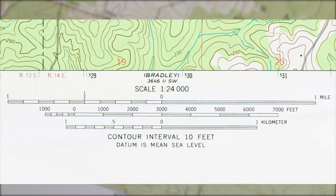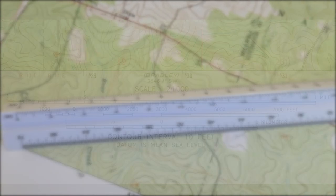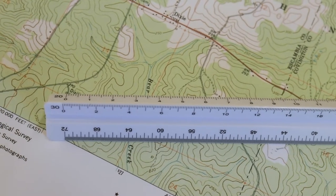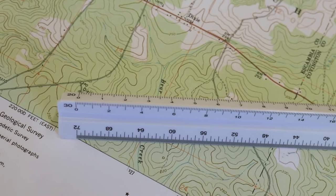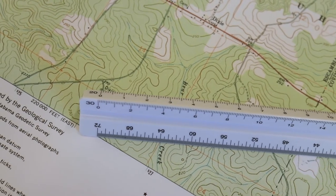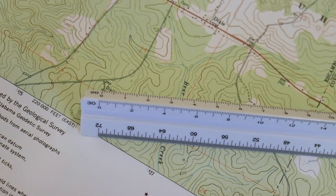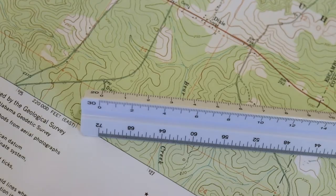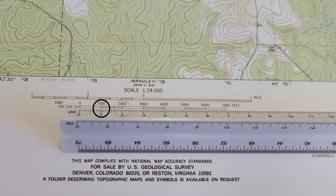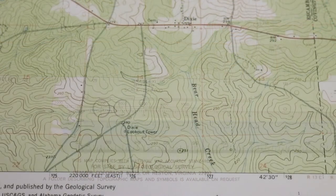Knowing that, we can then determine which side of the scale we should use to make our distance measurements. Because 1 inch equals 2,000 feet on this map, we can use the 20 side of the engineer's scale. Each tick mark will represent 100 feet, making the number 1 on the scale equal 1,000 feet and the number 2 equal 2,000 feet.